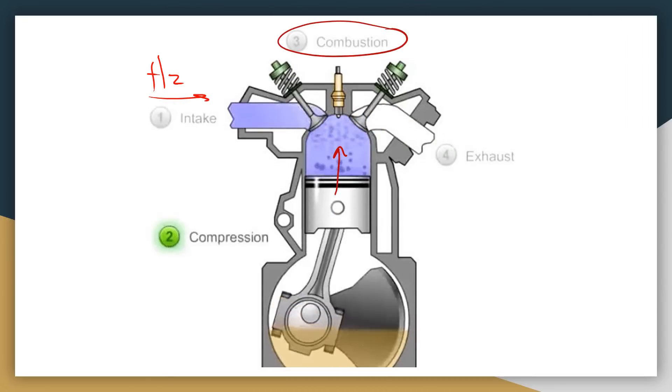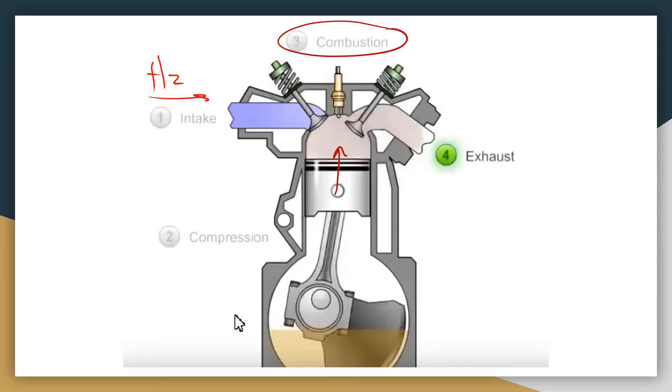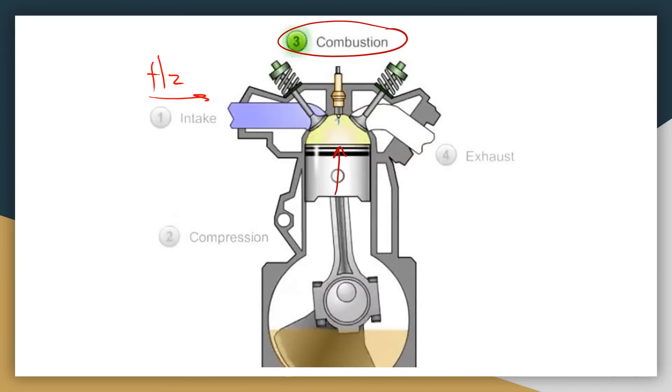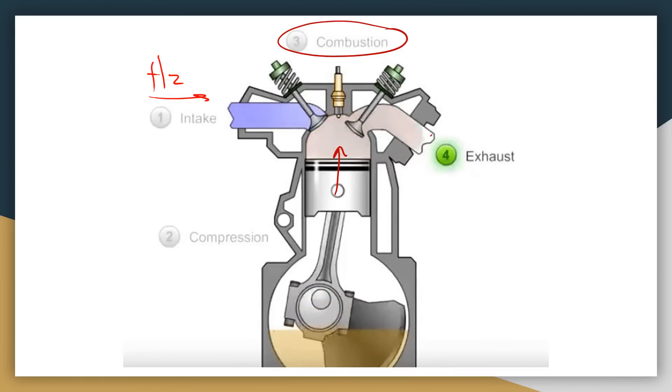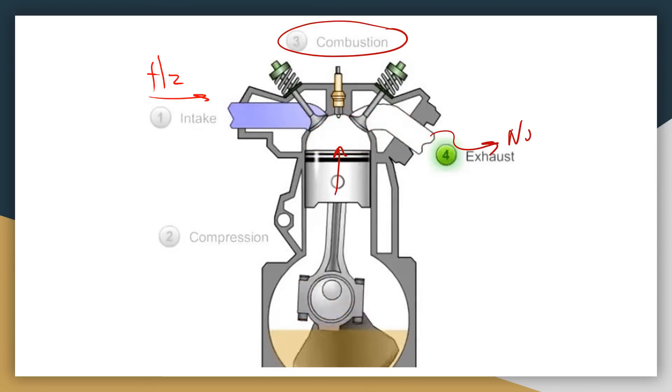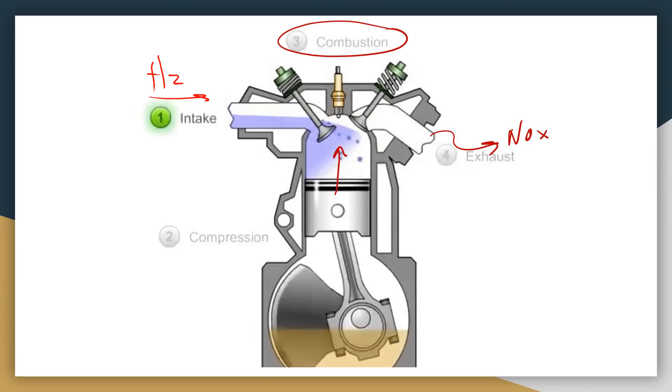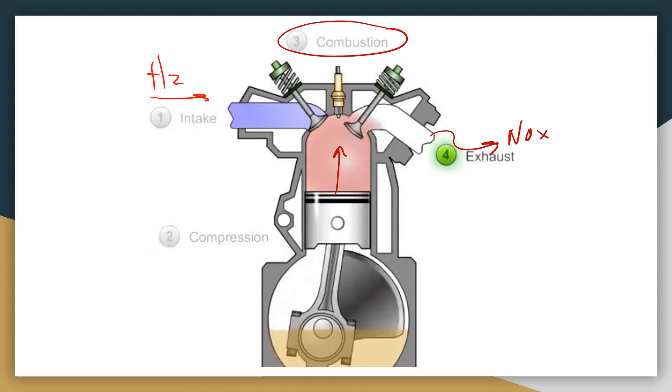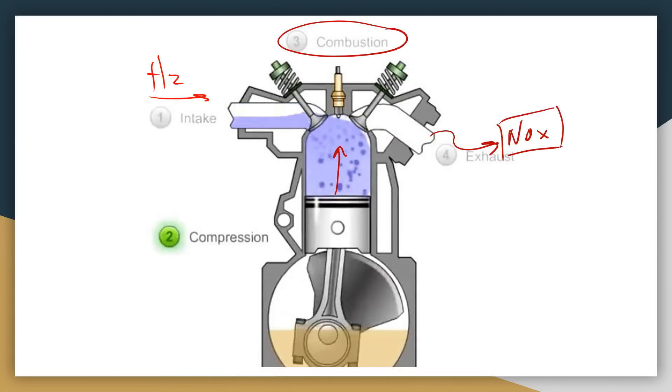And from that combustion step, that's where we get our power that's being generated from that piston and that volume expansion. And then furthermore, we're going to exhaust after that process. And from that exhaust, that's where we get our NOx out, and that's the byproduct that we don't want to have.